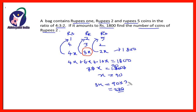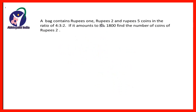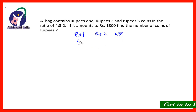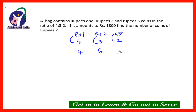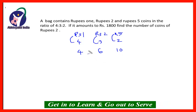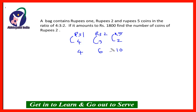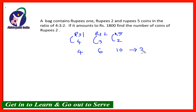Friends, there is another approach to solve this same question — whichever way you like, you can use. Here we see the other approach: there are 1 rupee, 2 rupees and 5 rupees coins in the ratio 4:3:2. So the value ratio will be 4×1 = 4, 3×2 = 6, and 2×5 = 10, meaning the value ratio is 4:6:10, which totals 20.